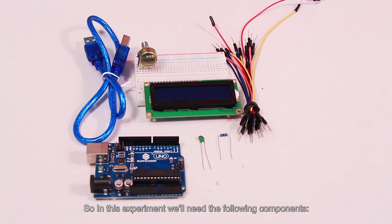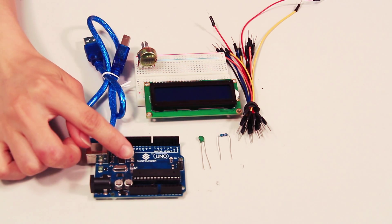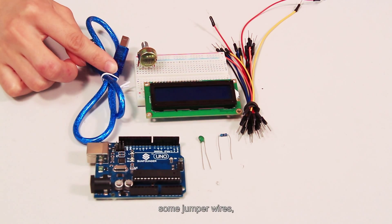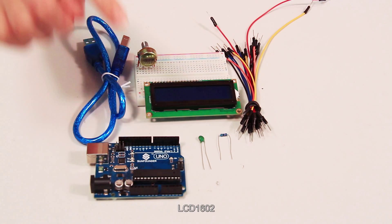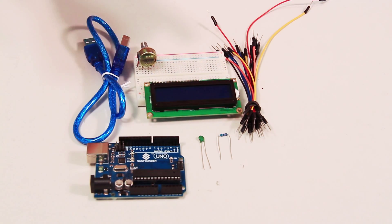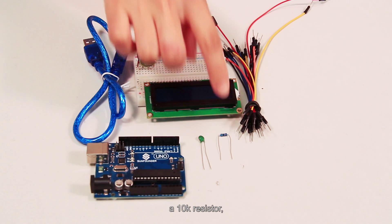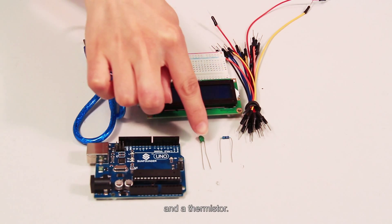So in this experiment, we'll need the following components: a breadboard, the SunFounder UNO board, a USB cable, some jumping wires, LCD1602, a potentiometer, a 10K resistor, and a thermistor.